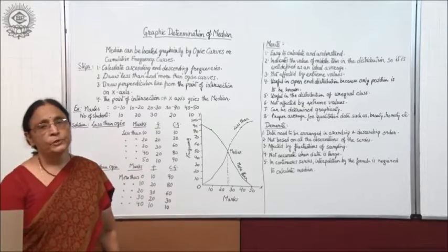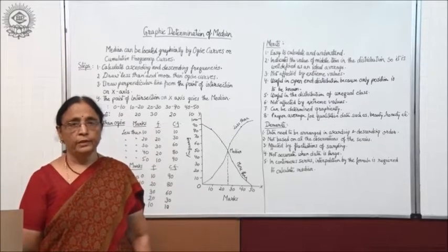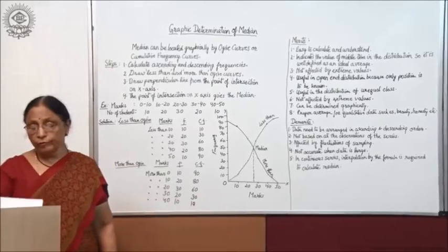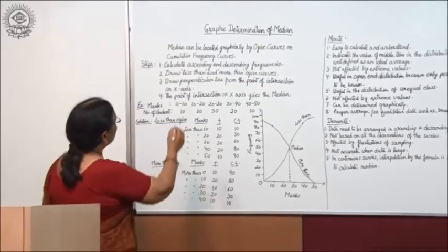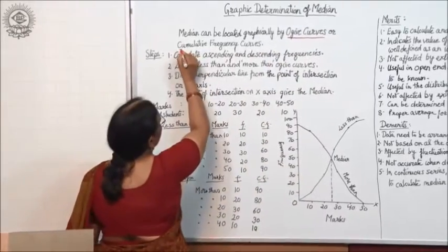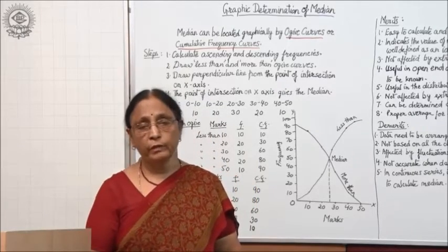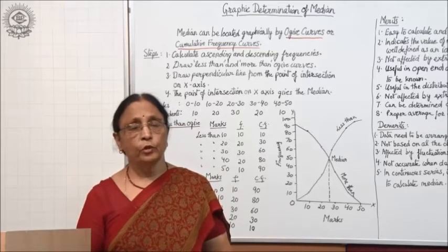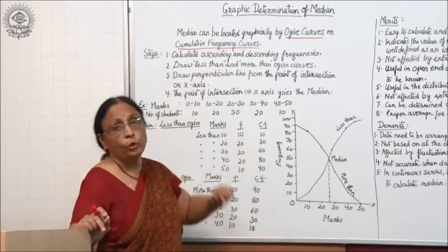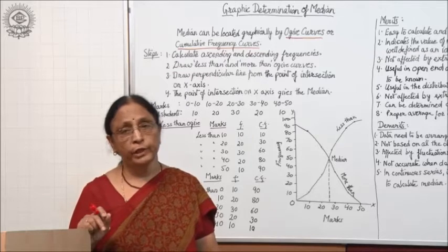Today I will tell you a very easy and interesting way of calculating median — the graphical determination of median. In this case, the median can be located graphically by ogive curves, also called cumulative frequency curves. With the help of these curves, we can locate the median, and these curves indicate less-than and more-than frequency.